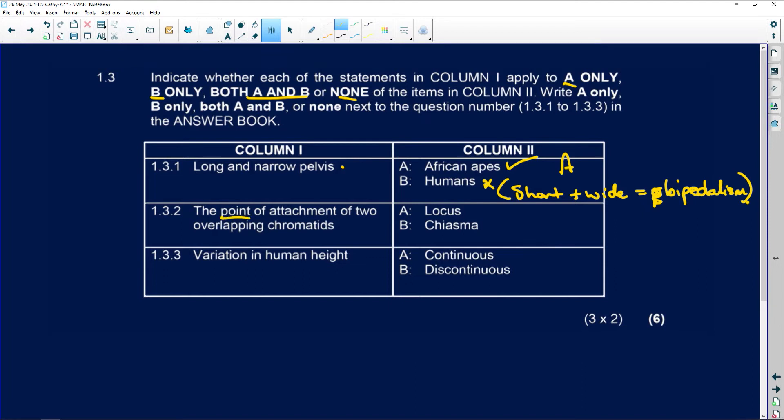The point of attachment of two overlapping chromatids, well, that's easy. It's the chisma. Okay, so the answer here is B. It's not the locus.